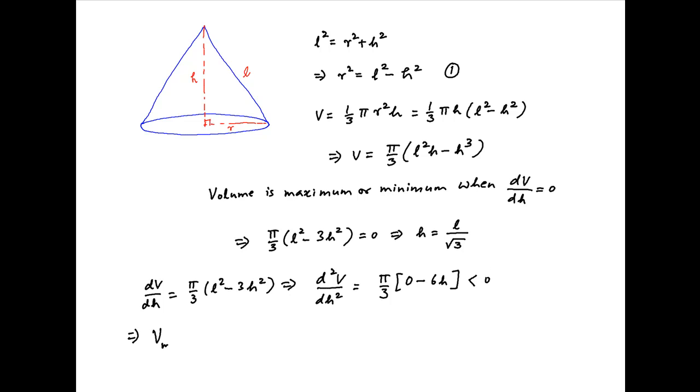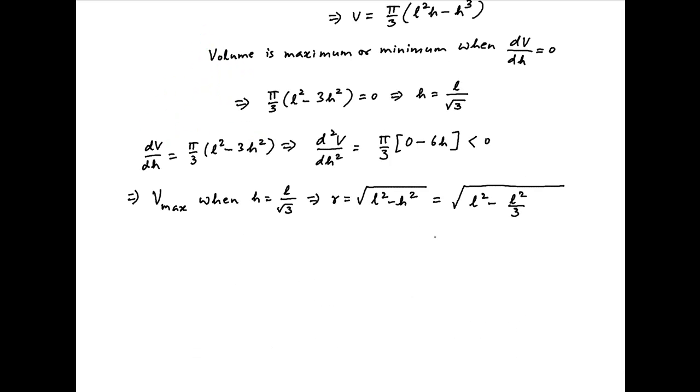Therefore, the volume V is maximized when H = L/√3, and the radius of the base of the cone equals √(L² - H²) = √(L² - L²/3), which simplifies to L√2/√3.